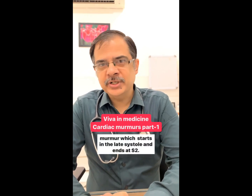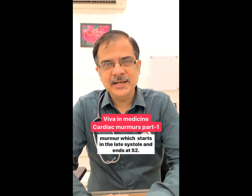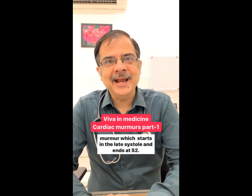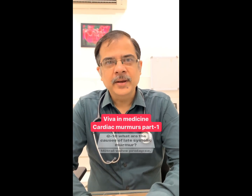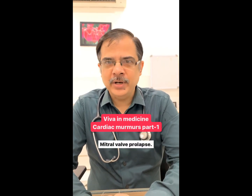What is late systolic murmur? Murmur which starts in the late systole and ends at S2. What are the causes of late systolic murmur? Mitral valve prolapse.